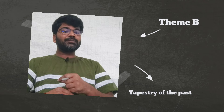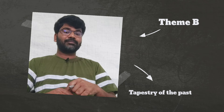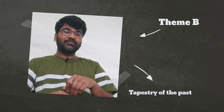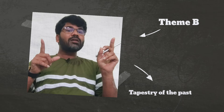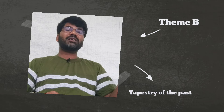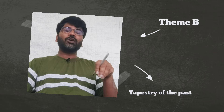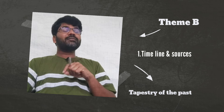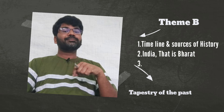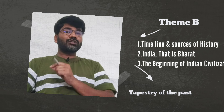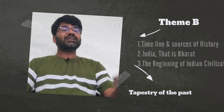Next comes Theme B. The name of Theme B is 'Tapestry of the Past.' A tapestry means a wall painting or wall-decorating poster of the past — nothing but like history. Theme B also has three concepts: one is 'Timeline and the Sources of History,' the second one is 'India, that is Bharat,' and the third concept is 'The Beginning of Indian Civilization.'